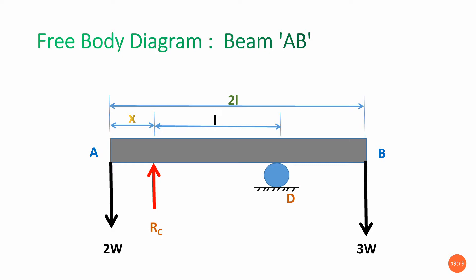We need to keep the body in equilibrium, so I have shown RC in the upward direction. Similarly, I am removing support D and showing the reaction force RD acting vertically upward at support D. At the same time, the dimensional properties are: distance AB is 2L, distance between C and D is L, and we need to find the X distance from point A to C. This is how we draw the free body diagram, after which we apply the equations of equilibrium.